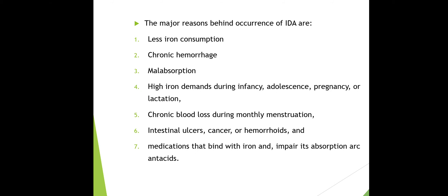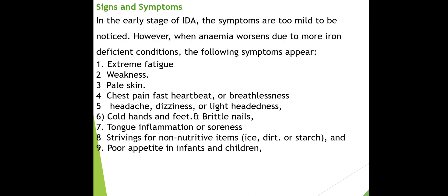Further causes include chronic blood loss from monthly menstruation, intestinal ulcers, cancer, hemorrhoids, and medications. Some medications reduce iron absorption — for example, antacids can affect the absorption of iron in the body.